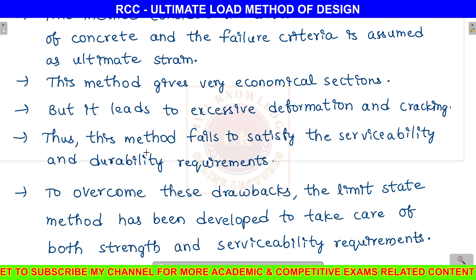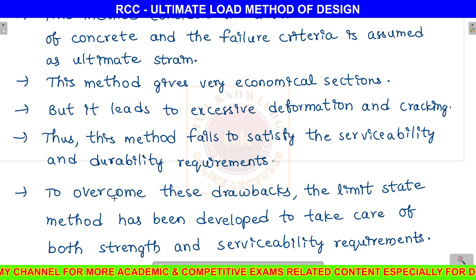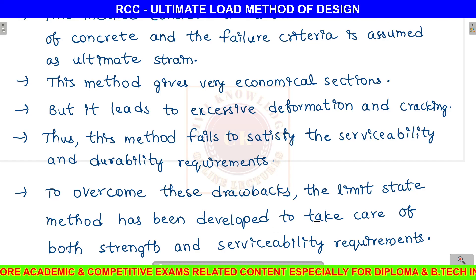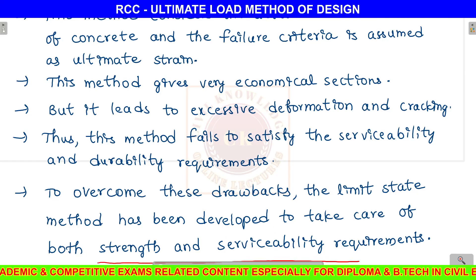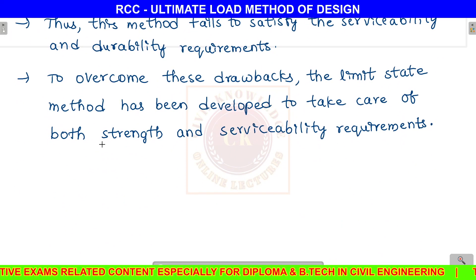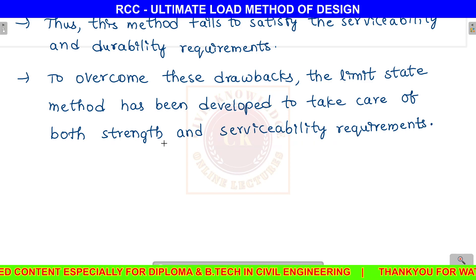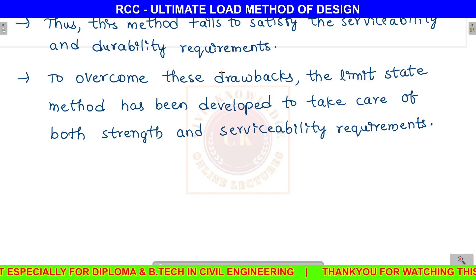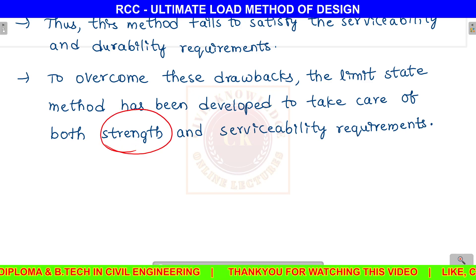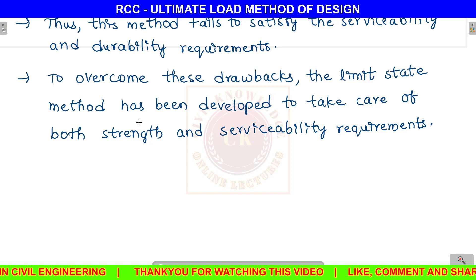The ultimate load method fails to satisfy serviceability and durability requirements. To overcome these drawbacks, the limit state method has been developed. It takes care of both strength requirements and serviceability requirements. The best example of strength requirements is addressed in the ultimate load method, where the building does not collapse.